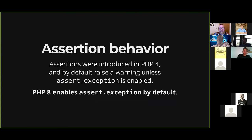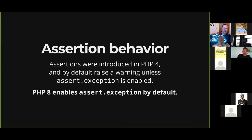The next change at the engine level: assertion behavior. Assertions were originally introduced in PHP 4, and by default all they've done is raise a warning unless you set the zend.assertions INI value to enabled. What PHP 8 does is enable that flag by default. If you were expecting assertions to only raise a warning in production and haven't changed your PHP INIs, they will now actually raise an exception. So again, be aware of that behavior.